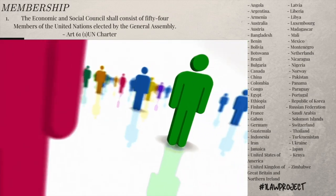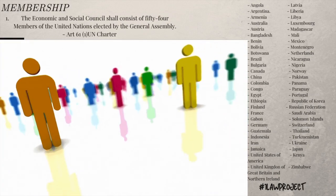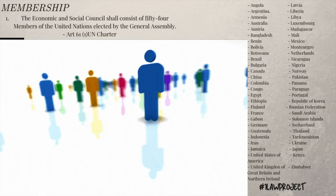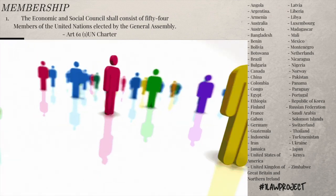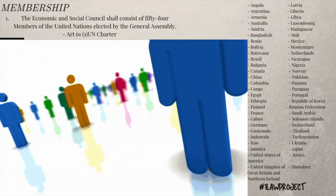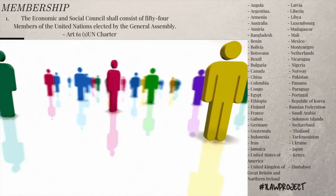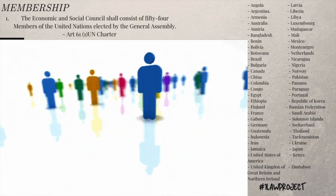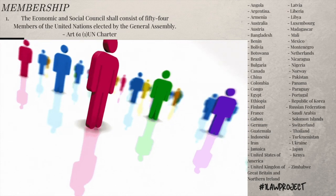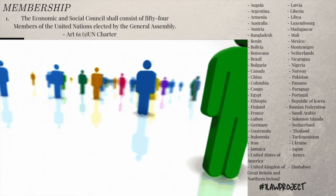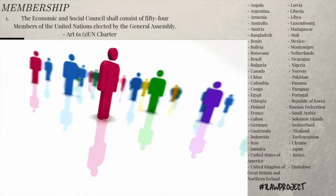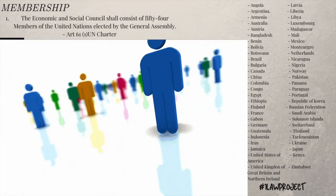At the moment, the members of ECOSOC are Angola, Argentina, Armenia, Australia, Austria, Bangladesh, France, Gabon, Germany, Guatemala, Indonesia, Iran, Jamaica, Japan, Kenya, Latvia, Liberia, Libya, Luxembourg, Madagascar, Mali, Republic of Benin, Bolivia, Botswana, Brazil, Bulgaria, and Canada.